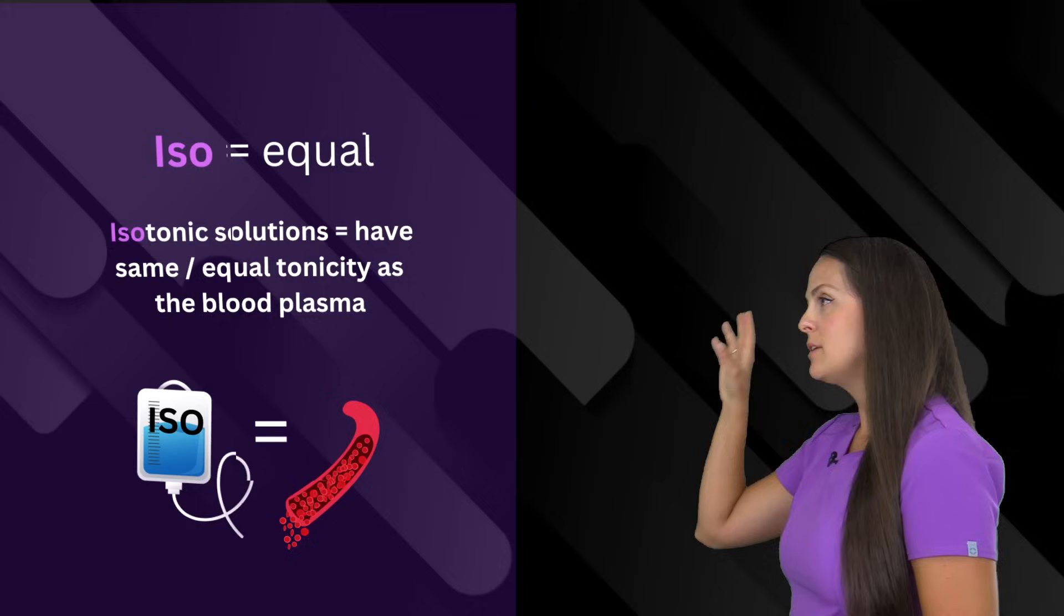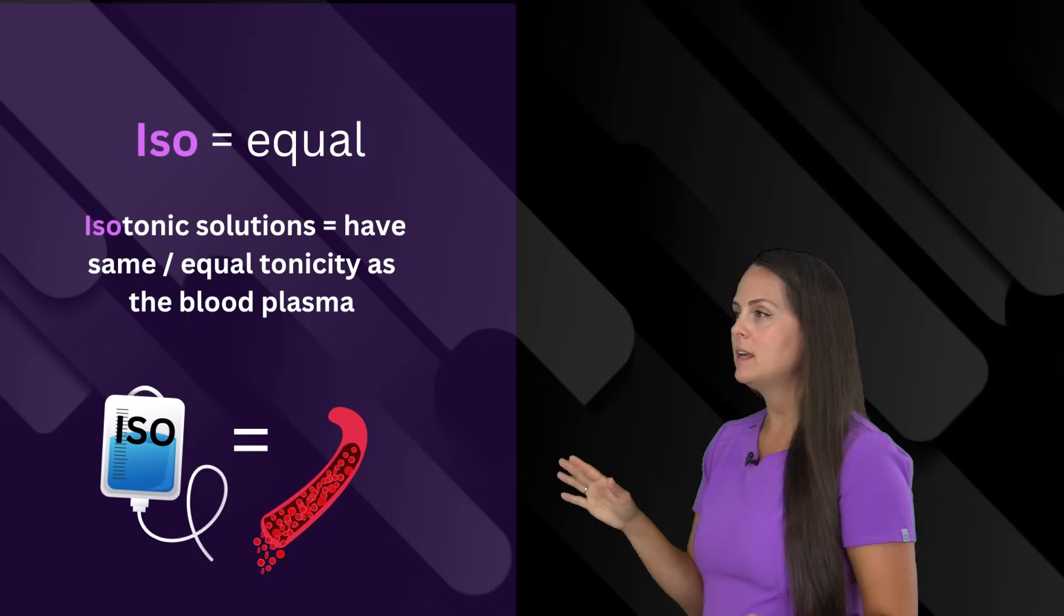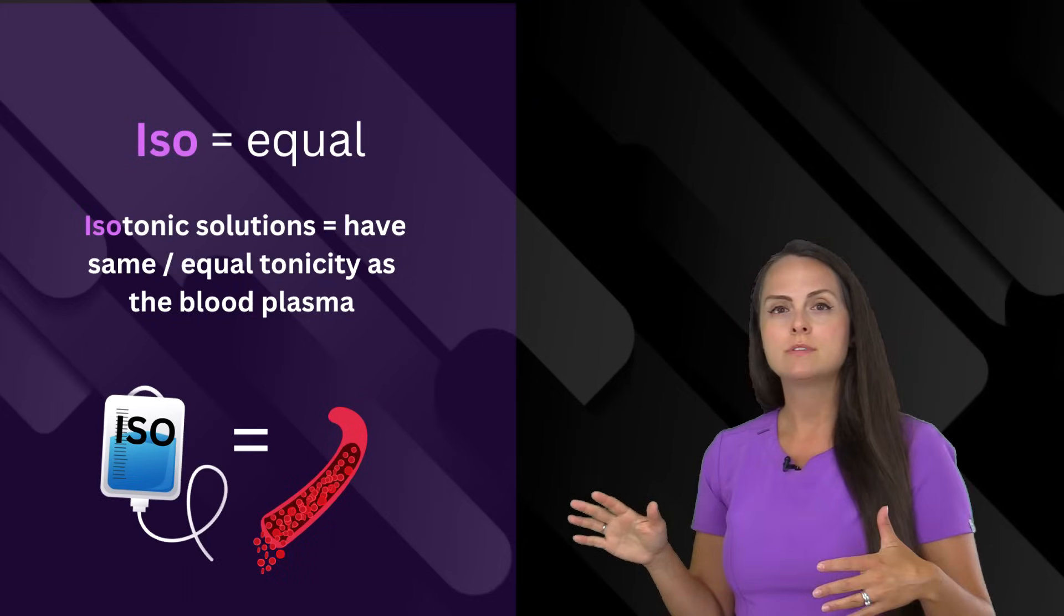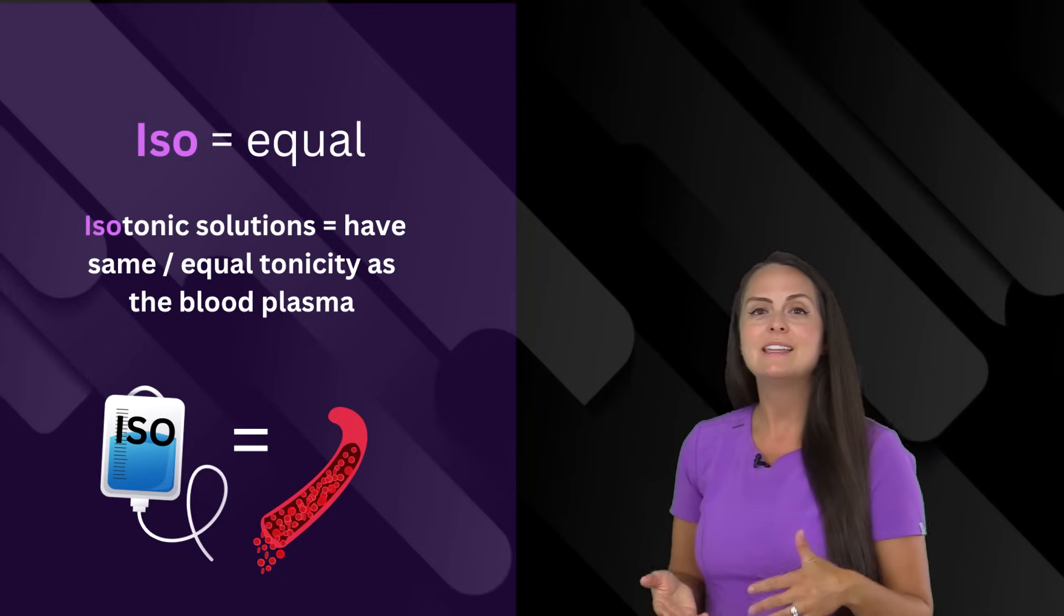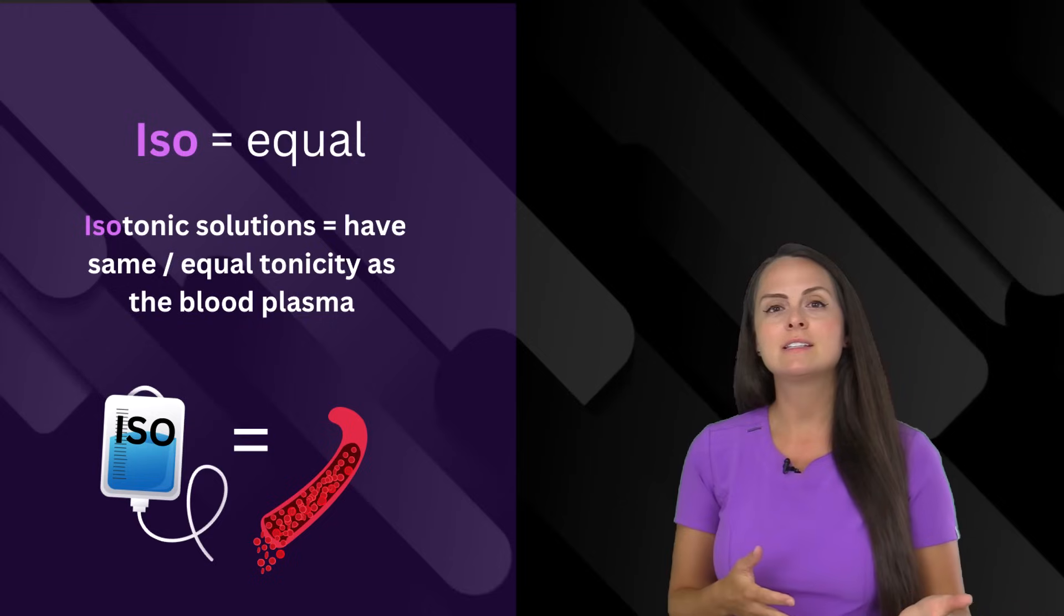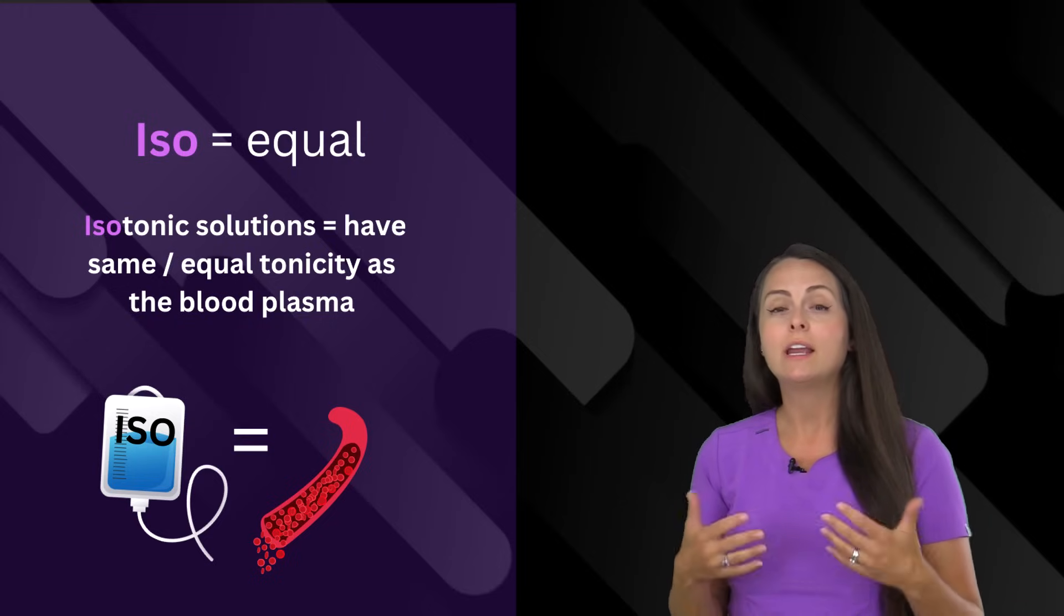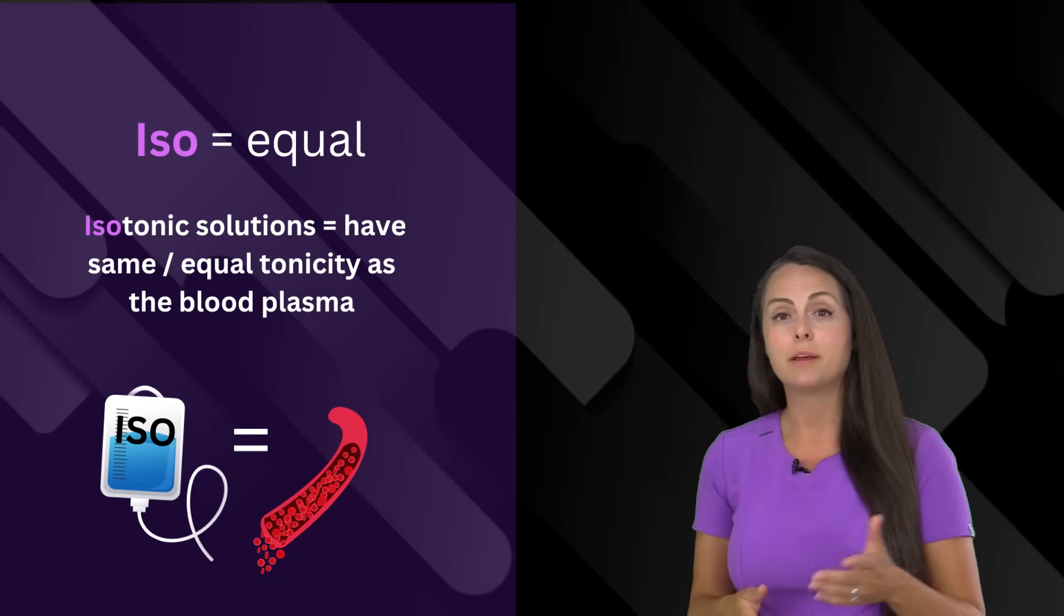Next is the prefix iso, which means equal. This can be used in the word isotonic or isotonic solutions. This means that these solutions have the same or equal tonicity as your blood plasma.